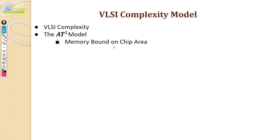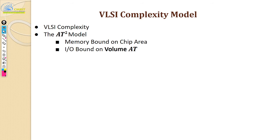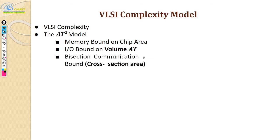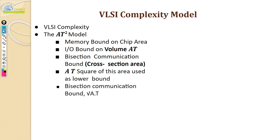The first constraint is the memory-bound chip area — there is only so much memory you can have in the chip area. If you have a chip, it can physically store only so much memory, so there is a bound to that. The second one is the IO bound, modeled as a volume. The third one is the communication bound. There is also a metric AT².